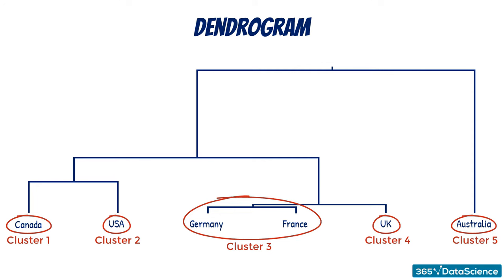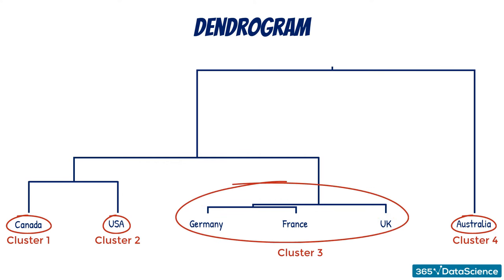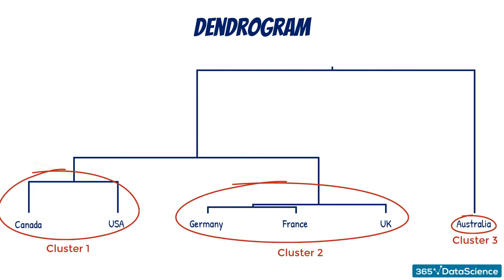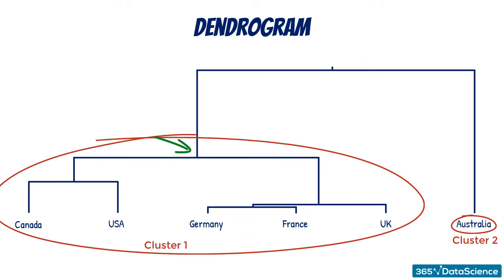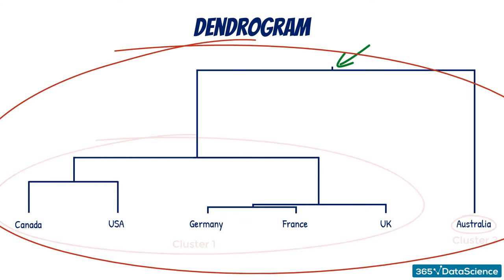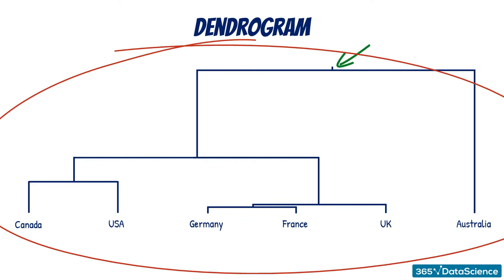The next two lines that merge are those of the Germany-France cluster and the UK. At this point, there are four clusters: Germany, France, and the UK are one, and the rest are single observation clusters. At the next stage of the hierarchy, Canada and the US join forces. The next step is to unite the Germany-France-UK cluster with the Canada-US one, while Australia is still alone. Finally, all countries become one big cluster representing the whole sample.